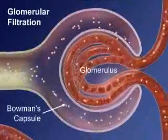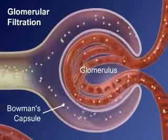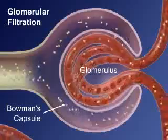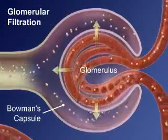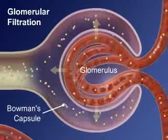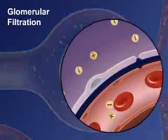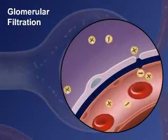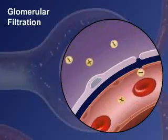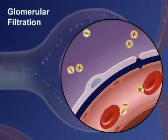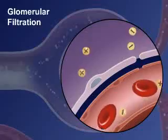In glomerular filtration, the glomerulus filters water and certain dissolved substances from the plasma of the blood. This results in increased blood pressure, which forces the plasma-like fluid from the blood into Bowman's capsule and then into the tubules. The fluid or filtrate includes many positive and negative ions of many elements. The filtrate does not have any proteins or red blood cells, which are too large to pass through the capillary membrane.